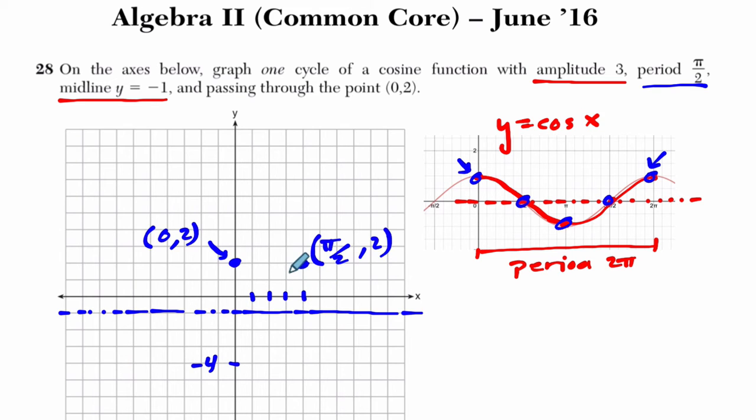Now, what else do we know? Well, halfway between 0 and pi over 2 is pi over 4. And at pi over 4, the cosine function will hit its lowest point here. So this dash represents pi over 4. It's a fourth essentially of pi, which is half of a half. And the output is negative 4.